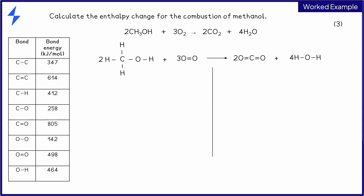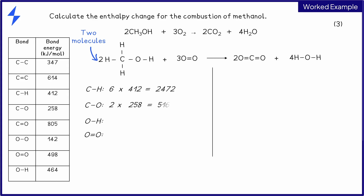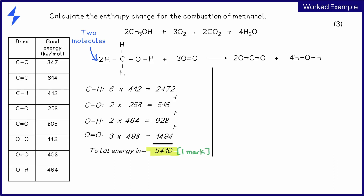Separate your reactant and product, and start by identifying the types of bond present in the reactant. Remember to take into account the number of molecules for each substance. There are 6 carbon-hydrogen bonds, 2 carbon-oxygen bonds, 2 oxygen-hydrogen bonds, and 3 oxygen-oxygen double bonds. Add these numbers together to find out the total energy needed to break the bonds. This gives you a number of 5,410 kilojoules per mole, and will score you one mark.